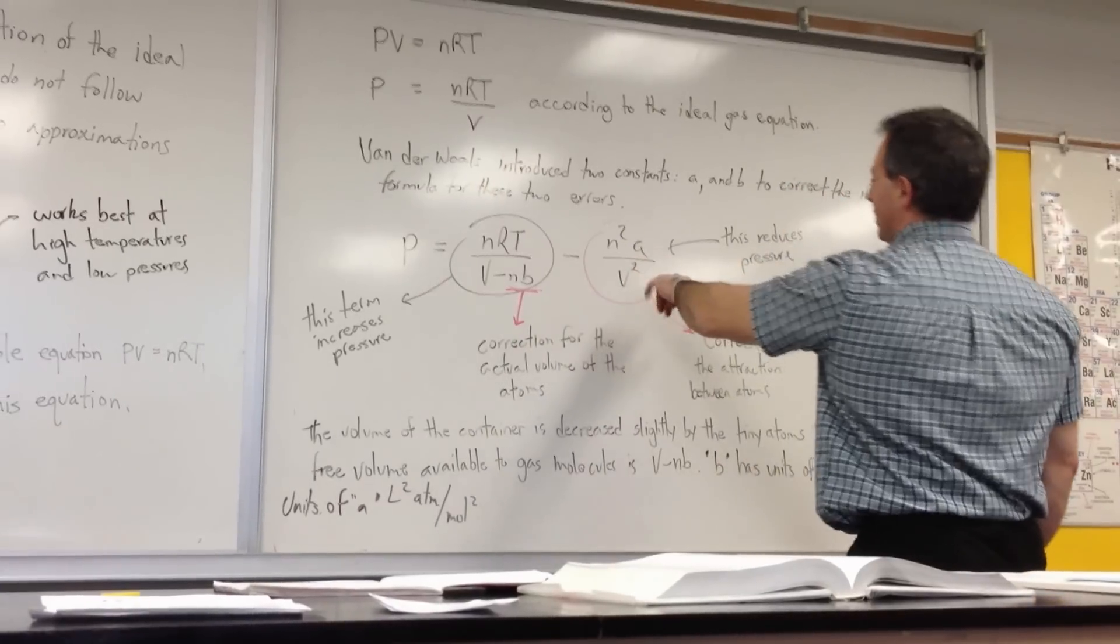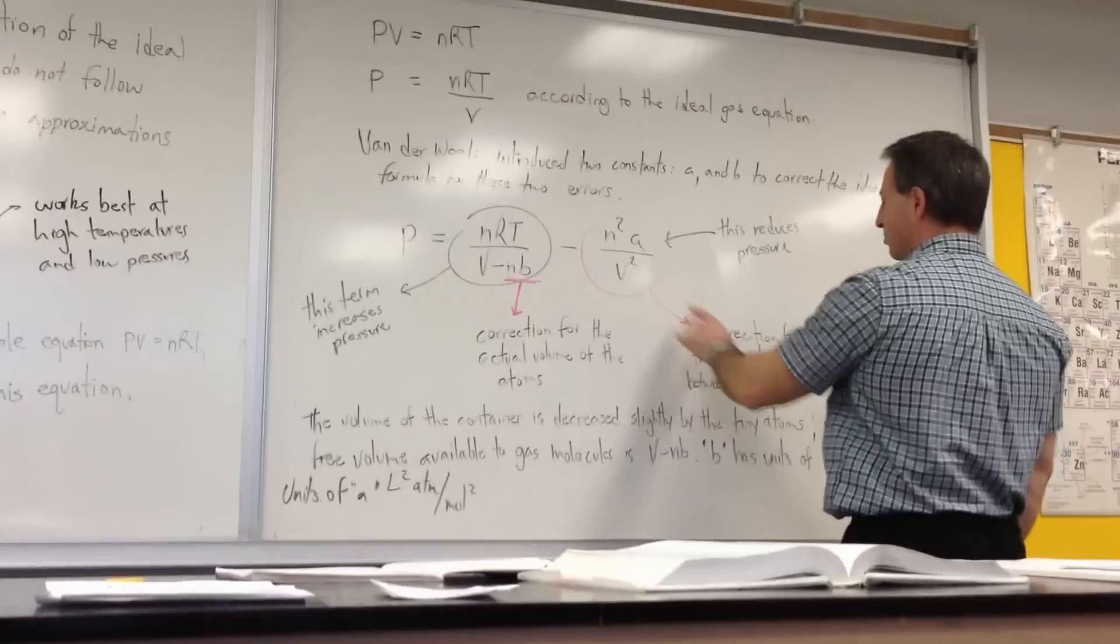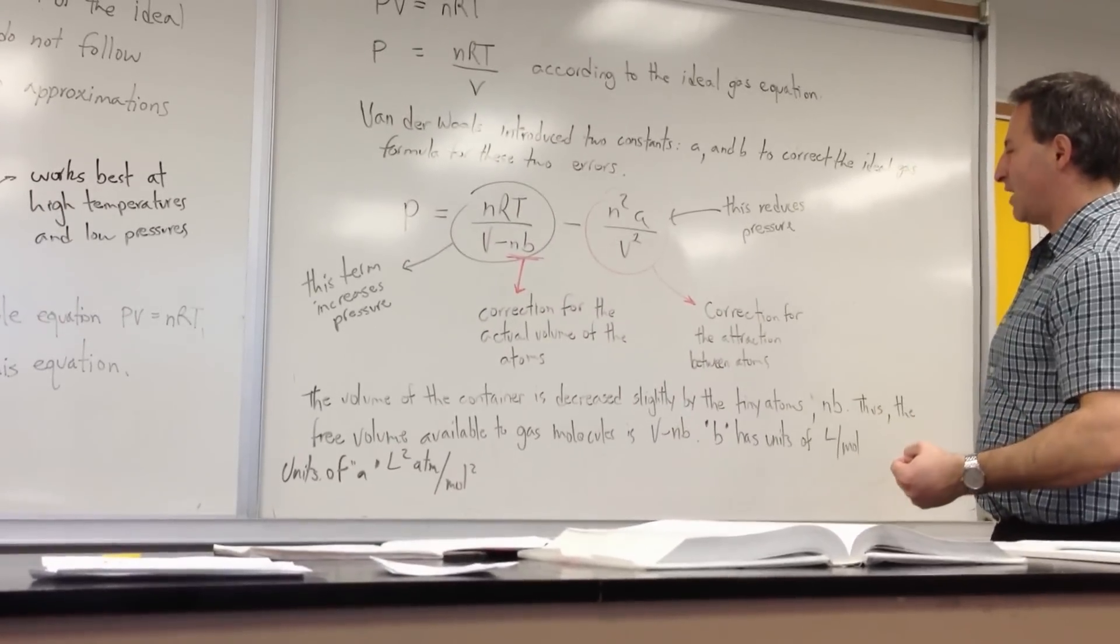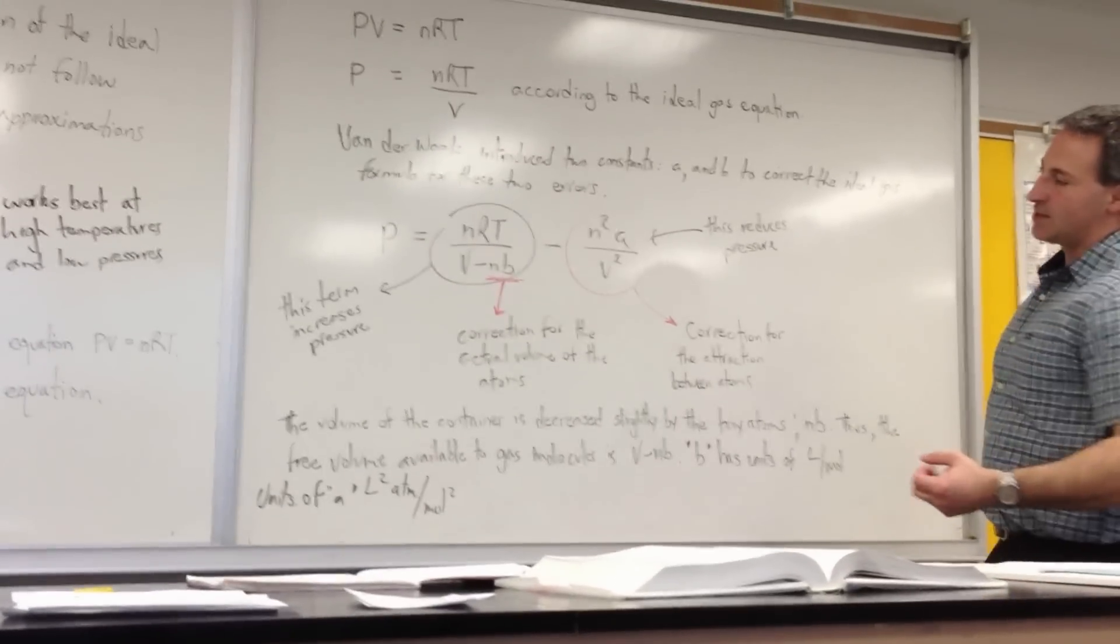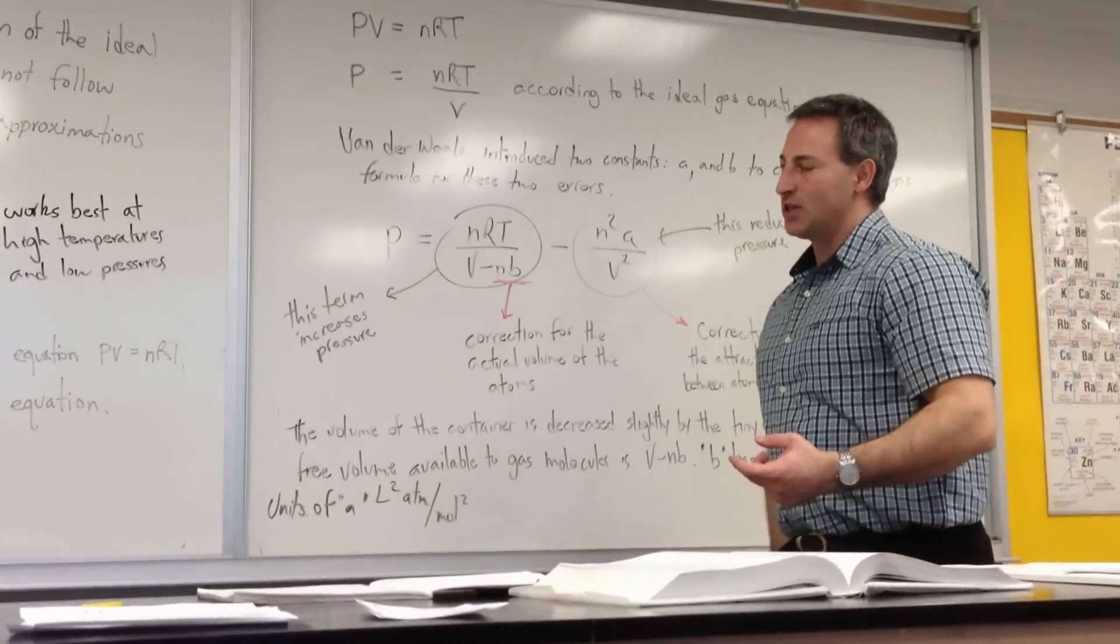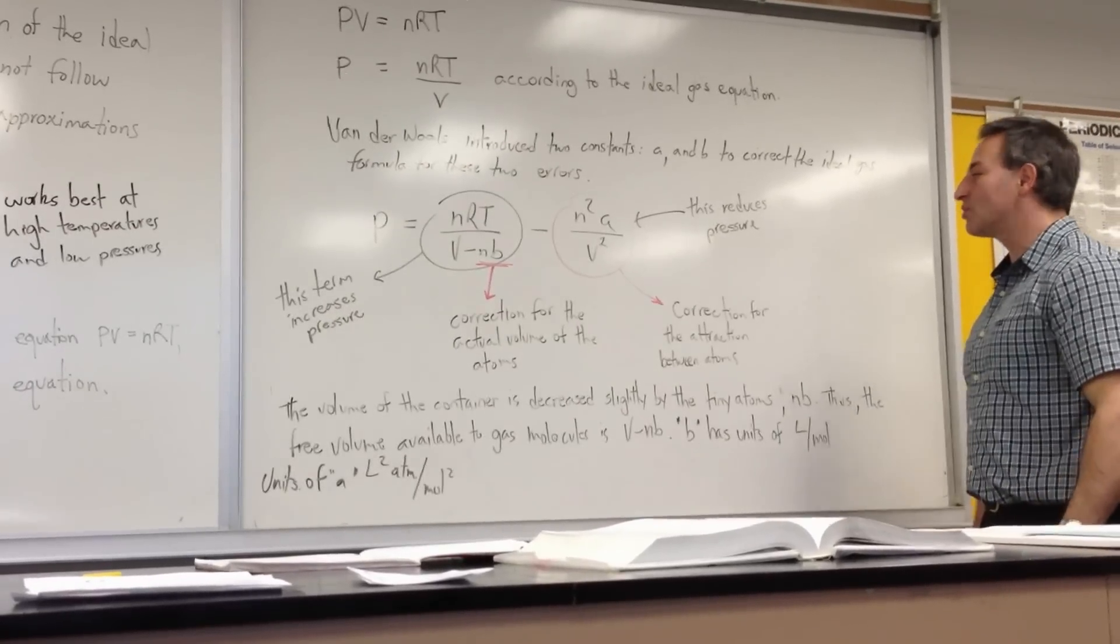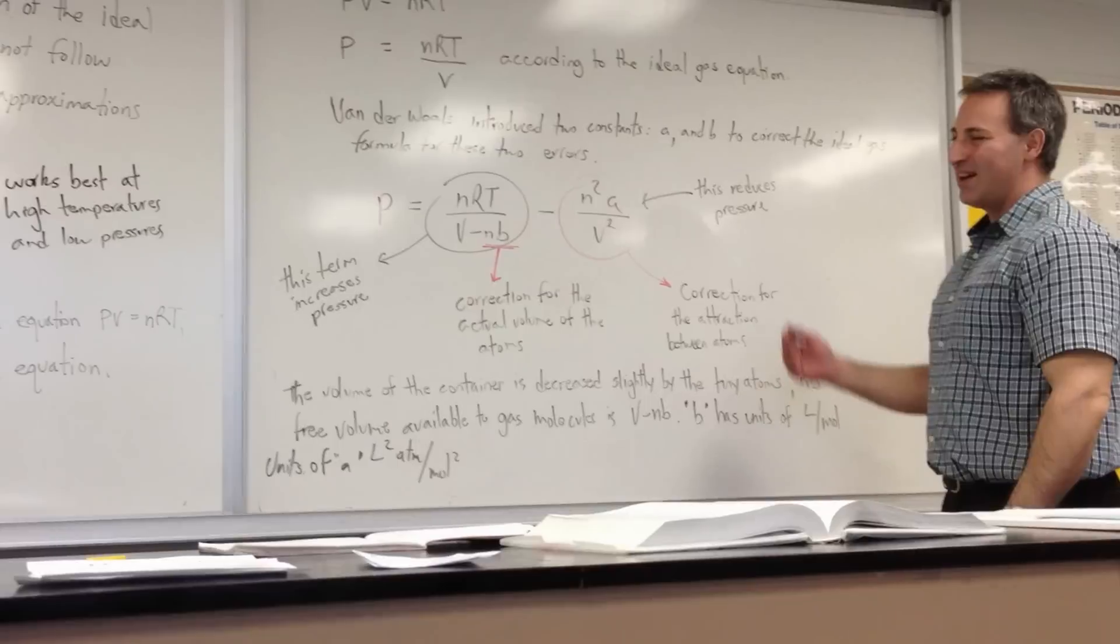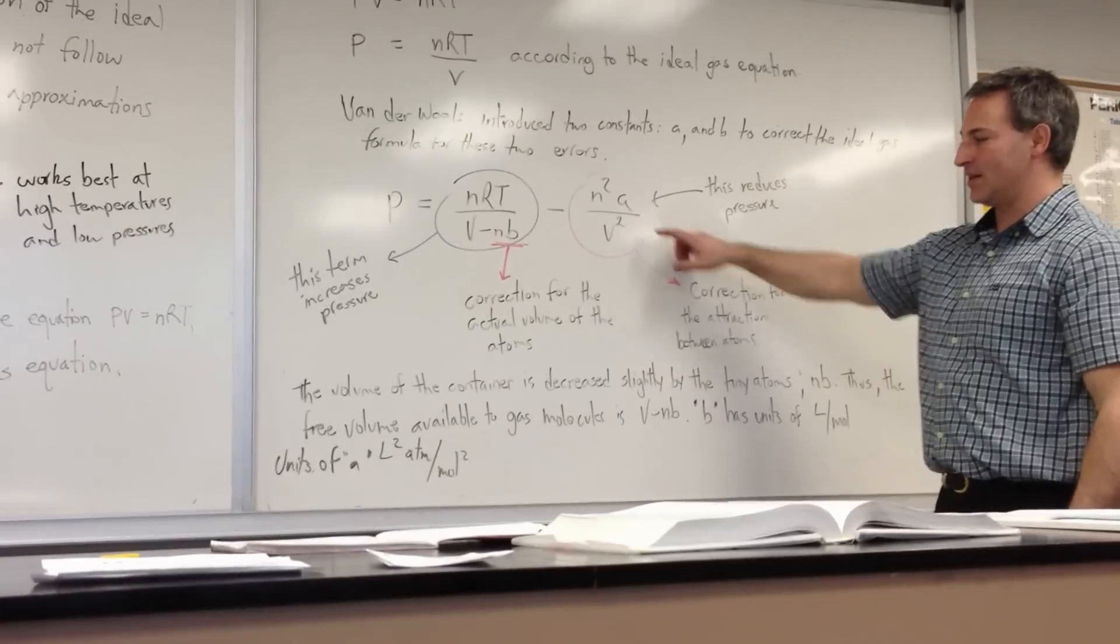On the other hand, this term tends to reduce the pressure. Why is it causing the reduction of pressure? Because it's the correction for the attraction that gas molecules actually have between each other. When two gas molecules collide, the ideal gas equation makes the approximation that they have no interaction, that there's no attraction between the gas molecules. But in truth, gas molecules do have a slight attraction for each other when they collide, and that takes away from some of their kinetic energy. So this has the effect of reducing the actual pressure of the gas.